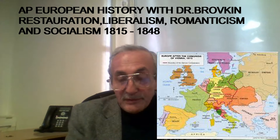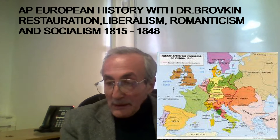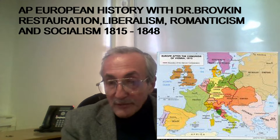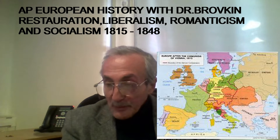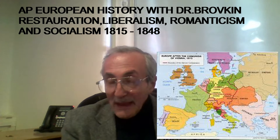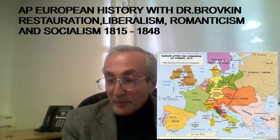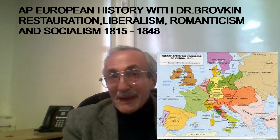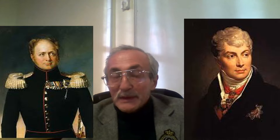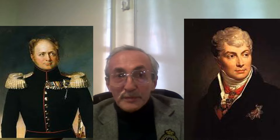Welcome to AP European History with Dr. Brovkin. We continue today with 19th century Europe. The topic is a survey of new trends coming under the title Restoration, Liberalism, Romanticism, and Socialism. We're going to deal with each of those new trends that appeared in Europe after the Congress of Vienna, dealing with a period from 1815 to 1848, which would shake it all up in the revolutionary upheaval all over Europe — the revolution of 1848.